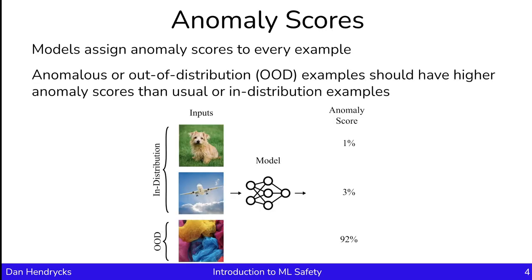To detect anomalies, we'll need a model that can assign each example an anomaly score. Consequently, the anomalous or out-of-distribution examples should have higher anomaly scores than usual, typical, or in-distribution examples. In the figure below, here are in-distribution examples assigned anomaly scores and an out-of-distribution example assigned an anomaly score. As we can see, the in-distribution examples have lower anomaly scores than the out-of-distribution example, which is the correct behavior that we would want from an anomaly detector.